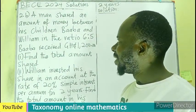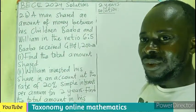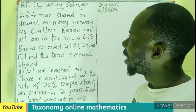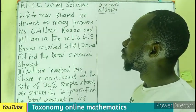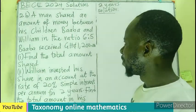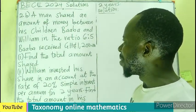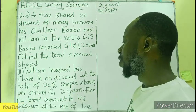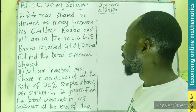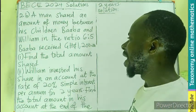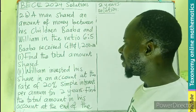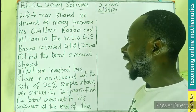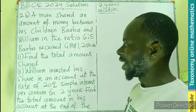Hello, welcome. BAC 2024, question 2B. A man shared an amount of money between his children Baba and William in the ratio 5 to 6 to 5. Baba received 1,200. We had to find the total amount shared.